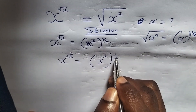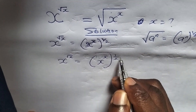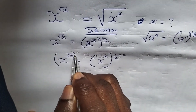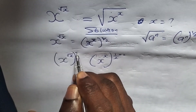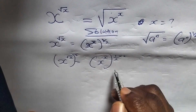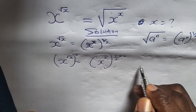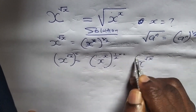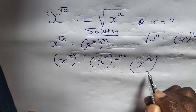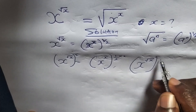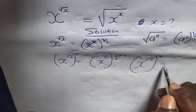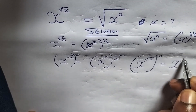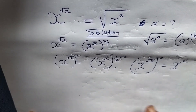In order to remove this 2, I can multiply both sides with the power of 2. So if I do that, I'm now having x to the root of x, the full bracket to the power of 2, is equals to this, and this will cancel off. So we are now having x to the power of x.